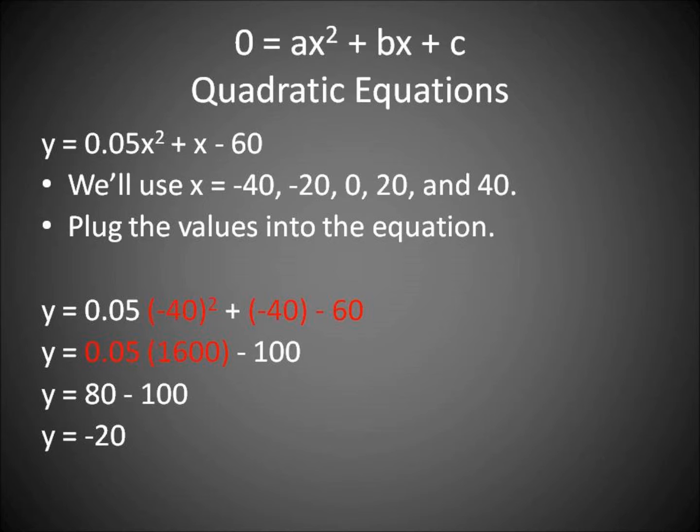Plug in negative 40 squared and negative 40 minus 60. We'll multiply. We'll have 0.05 multiplied by 1600 minus 100, which gives us 80 minus 100. Y equals negative 20.